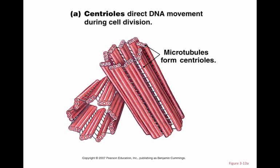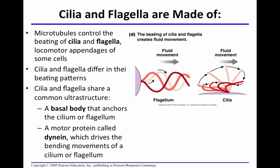This is a pictorial diagram of the microtubules and how they form the centrioles, which direct DNA movement during cell division. Cilia and flagella are also made of microtubules, and the microtubules are in control of the movement of cilia and flagella — including in sperm cells, which is how sperm move.